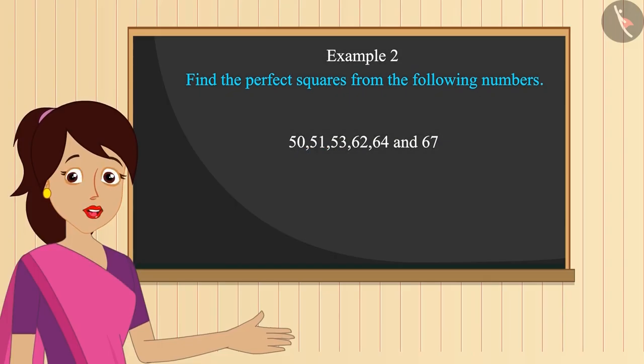Let's find the solution. Here, we will first see how many of the given numbers have 2, 3, 7 and 8 in the ones place.